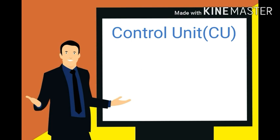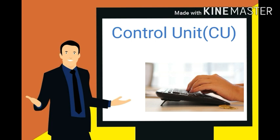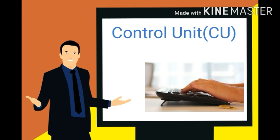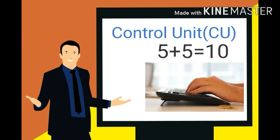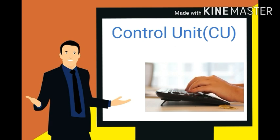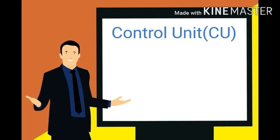Control unit सारा काम control करती है — यह ALU को किसी भी operation को करने के लिए instruction देती है। For example, suppose आपको एक mathematical problem solve करनी है। आप 5 plus 5 type करते हैं, तो उसकी processing control unit control करेगी, और वो ALU को उसे process करने के लिए बोलेगी। ALU उसे solve करके result वापस control unit को भेजेगी, और उसके बाद आप अपना answer देख सकते हैं।